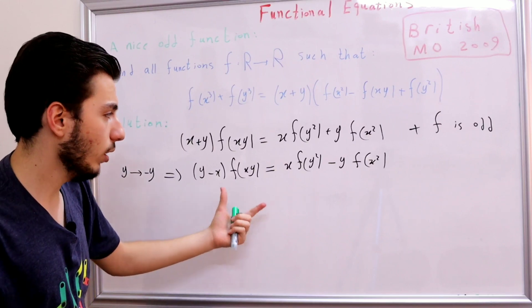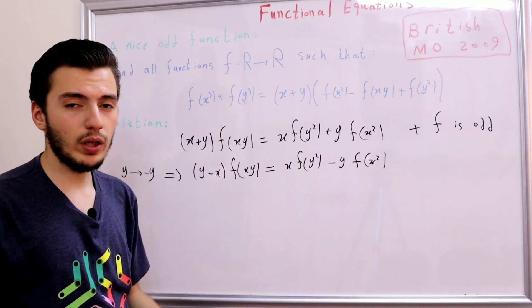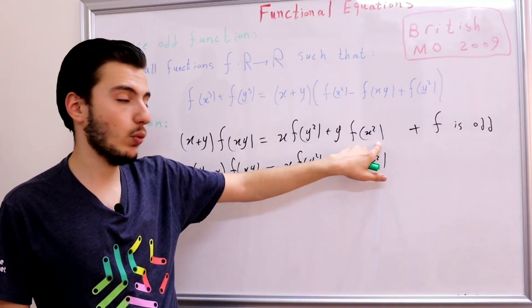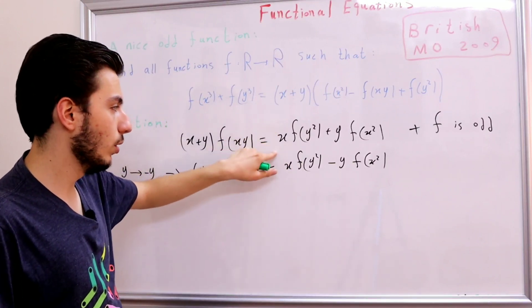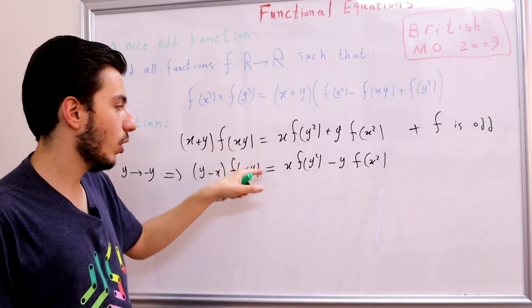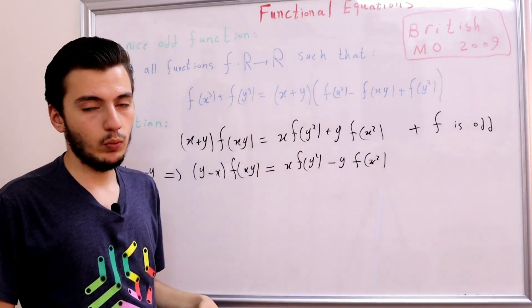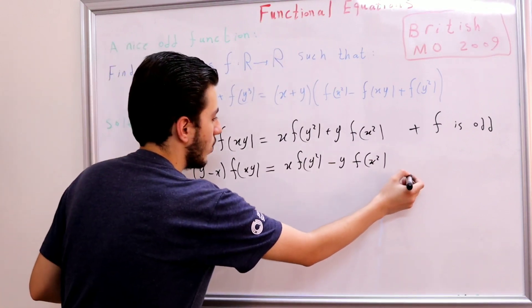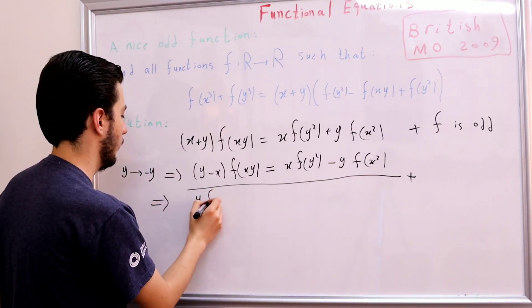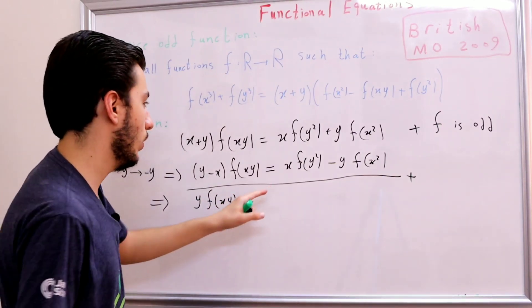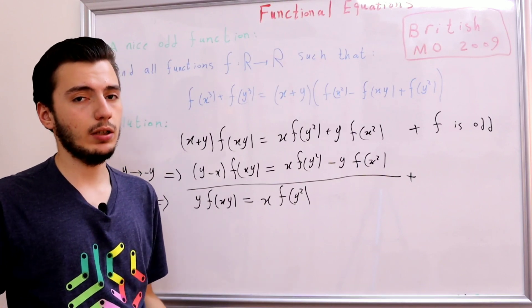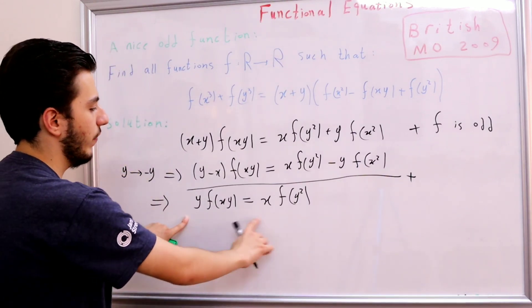Now we have two similar functional equations. Summing them: the terms x·f(y²) cancel, and the y·f(x²) terms cancel, while the left-hand sides combine. After simplification we get 2y·f(xy) = 2x·f(x²), so y·f(xy) = x·f(x²).